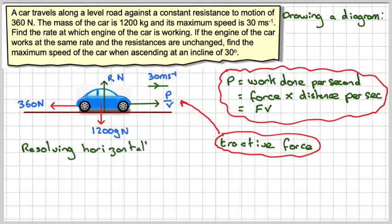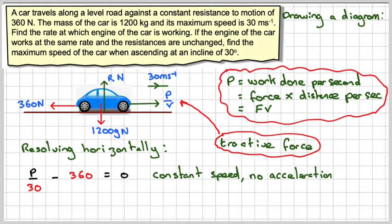Now, if we resolve horizontally, we're going to have P over V. P, which we need to find, and V is 30, so it's going to be P divided by 30 minus the resistance, which is 360. It's going to be equal to zero. Now it's equal to zero because we've got a constant speed, we're at the maximum speed, so there's no acceleration.